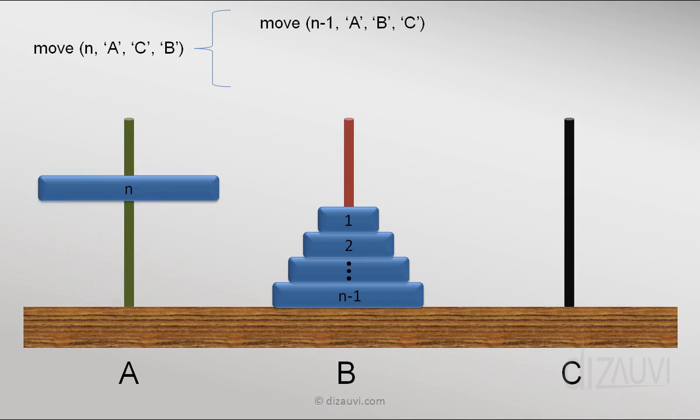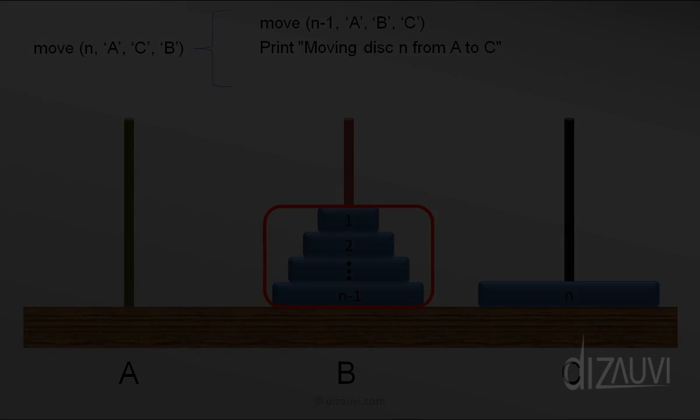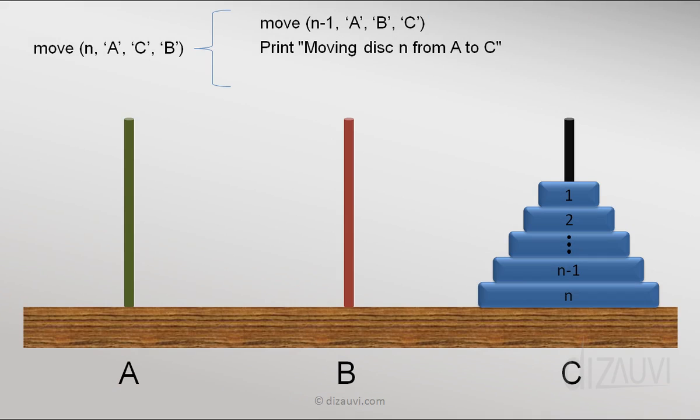Then we can move disk N from A to C, which is what we can print. And then we recursively move these n-1 disks from tower B to tower C using tower A. So we can again call the move method recursively with this different set of parameters.